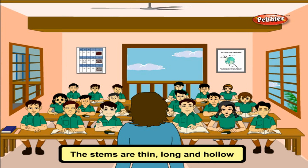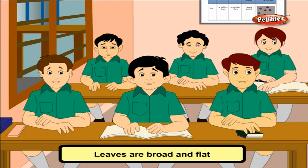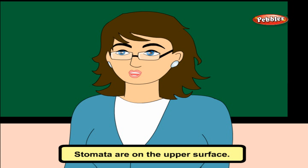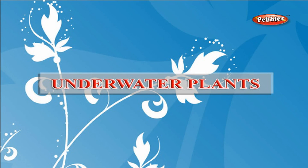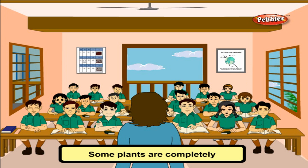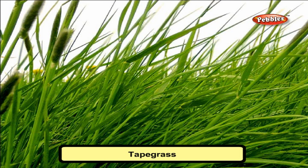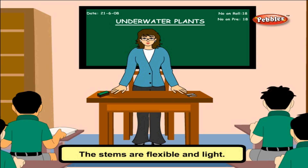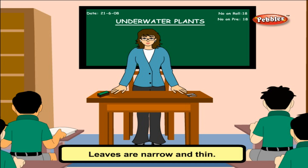Adaptations of fixed plants: The stems are thin, long and hollow. Leaves are broad and flat, which keeps them afloat. A waxy coating is found on the leaf surface. Stomata are on the upper surface. Underwater Plants: Some plants are completely submerged under the water, for example hydrilla, tape grass and pond weed. Their stems are flexible and light. There are no stomata on the leaves. Leaves are narrow and thin.